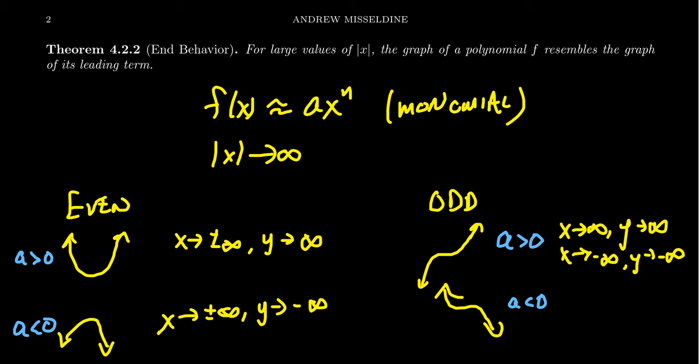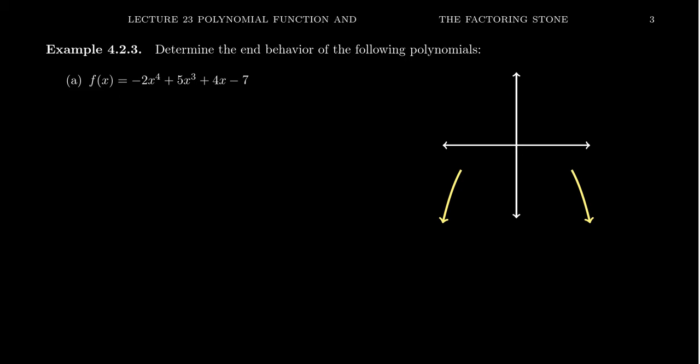If your leading coefficient were negative, that means there's been a reflection across the x-axis, which changes the end behavior. Now, as x approaches infinity, y approaches negative infinity — it points down on the right-hand side. And as x approaches negative infinity, y approaches positive infinity — it points up on the left. These are the only four possibilities for the end behavior of a polynomial. The end behavior depends solely on the leading term: once we identify it, we just need to know whether the degree is even or odd, and whether the leading coefficient is positive or negative.